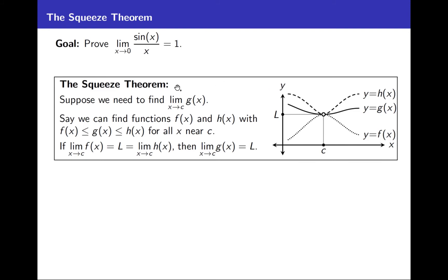So the conclusion of the Squeeze Theorem is that if the limit as x approaches c of f(x) equals L, which also equals the limit as x approaches c of h(x), then you can conclude that the limit as x approaches c of g(x) equals L. That's the Squeeze Theorem. To apply it, you have to use a little creativity — you've got to come up with two other functions f and h that both have the same limit L, and from that you conclude the more complicated function g has that same limit.